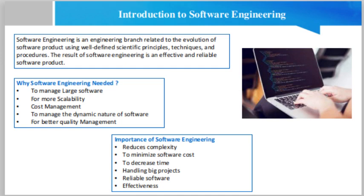The term software engineering is the product of two words: software and engineering. Software is a collection of integrated programs. Software consists of carefully organized instructions and code written by developers in various computer languages, computer programs, and related documentation such as requirements, design models, and user manuals. Engineering is the application of scientific and practical knowledge to invent, design, build, maintain, and improve frameworks and processes. Software engineering is an engineering branch related to the evolution of software products using well-defined scientific principles, techniques, and procedures. The result of software engineering is an effective and reliable software product.